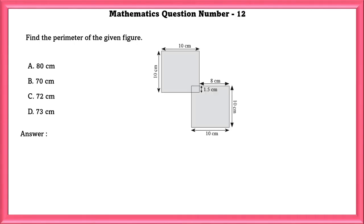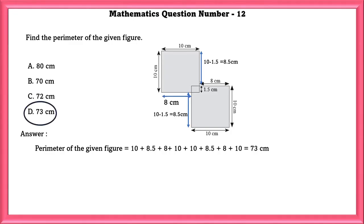Mathematics Question Number 12: Find the perimeter of the given figure. We can find the missing lengths and add them to find the perimeter. If we do that, we will get 73 cm.